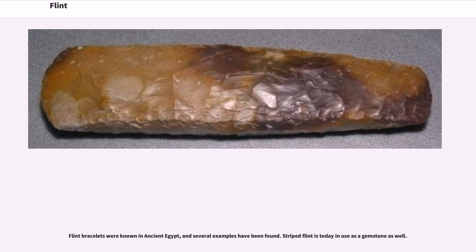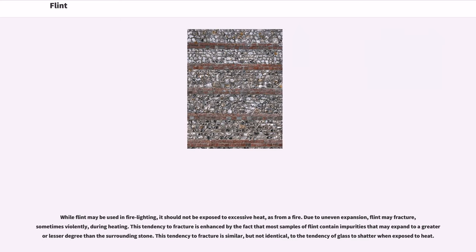Flint bracelets were known in ancient Egypt, and several examples have been found. Striped flint is today in use as a gemstone as well. While flint may be used in fire lighting, it should not be exposed to excessive heat, as from a fire. Due to uneven expansion, flint may fracture, sometimes violently, during heating. This tendency to fracture is enhanced by the fact that most samples of flint contain impurities that may expand to a greater or lesser degree than the surrounding stone. This tendency to fracture is similar, but not identical, to the tendency of glass to shatter when exposed to heat.